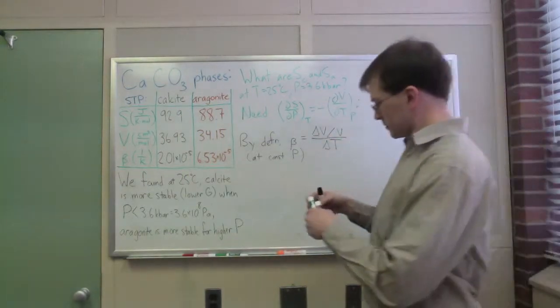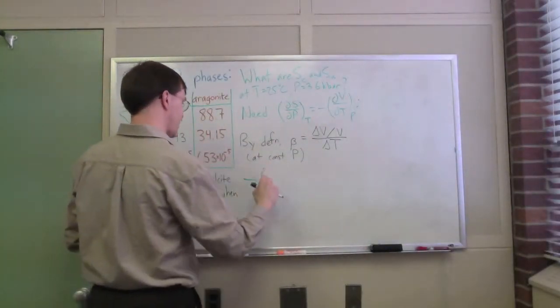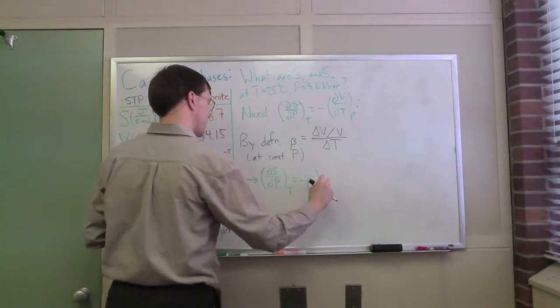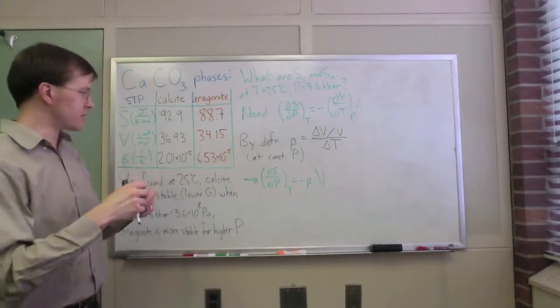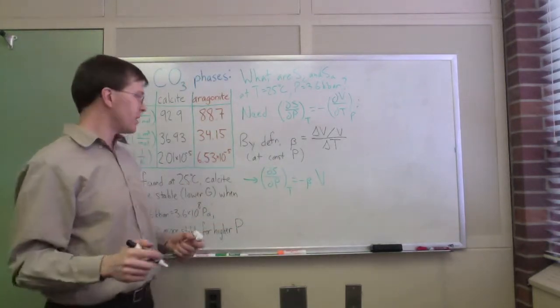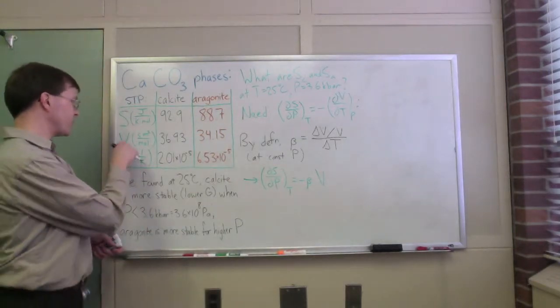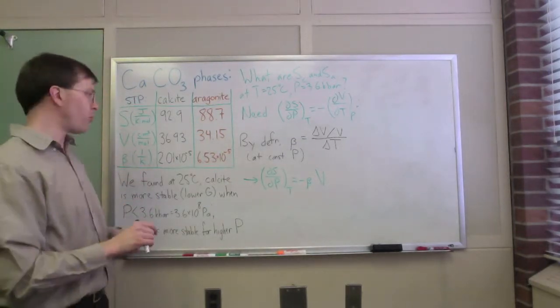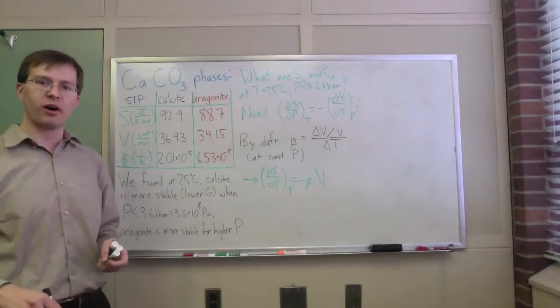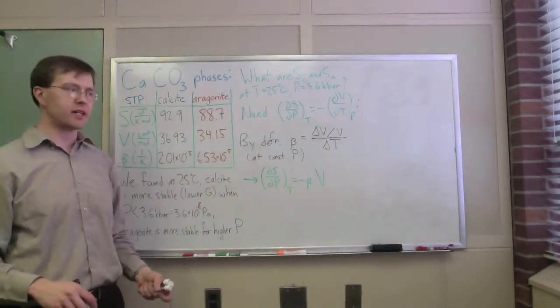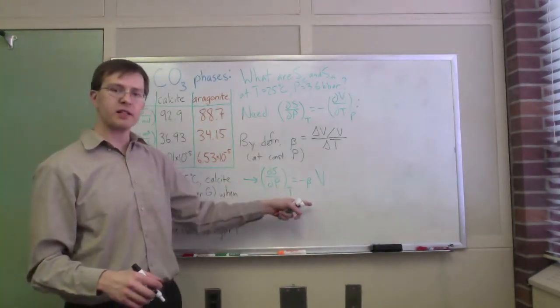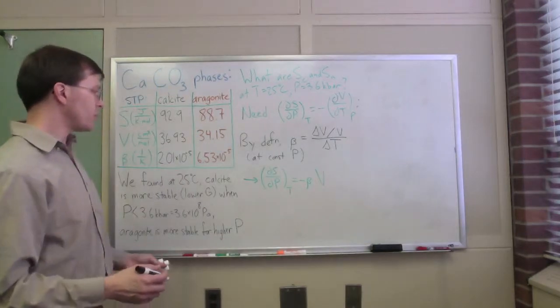In the problem we did in class, we even showed that dS/dP at constant T is minus beta times the volume per mole of our substance. This is our nice relationship. The cool thing is we can look up beta, we can look up volume. Volume only changes by about 0.5 percent between standard pressure and 3.6 kilobar, so the volume is going to be a minuscule change. The interesting thing is this beta is going to be important. Beta is pretty close to constant over this range.